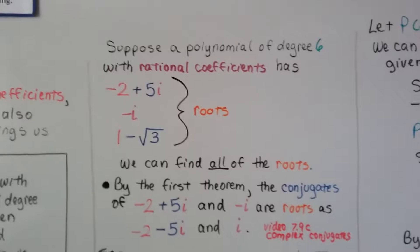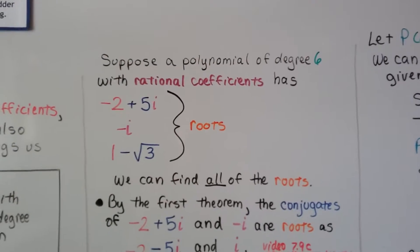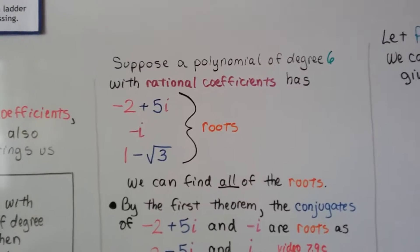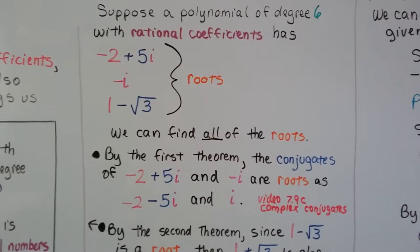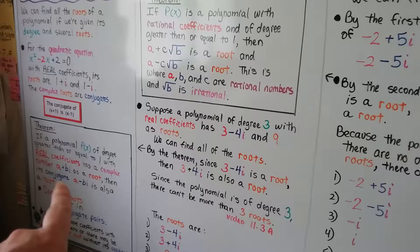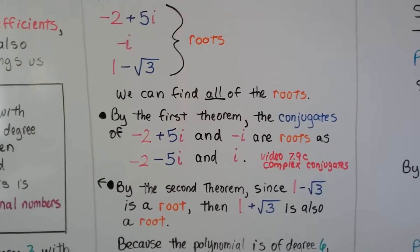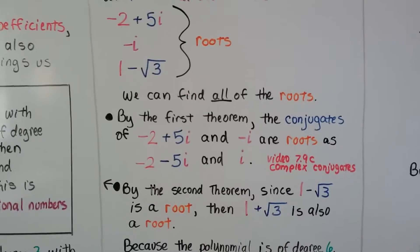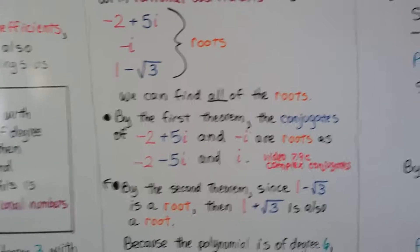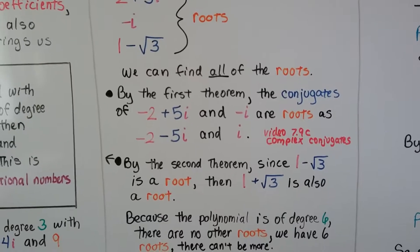Now suppose a polynomial of degree 6 with rational coefficients has negative 2 plus 5i and negative i, and 1 minus the square root of 3 as roots. We can find all the roots. By the first theorem about pairs, the conjugates of negative 2 plus 5i and negative i are roots as negative 2 minus 5i and i. We also have a link to the video 7.9c about complex conjugates in this description.